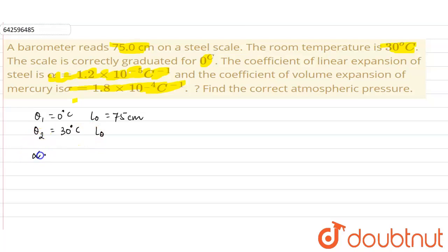Now the coefficient of linear expansion for the steel is given to us as 1.2 into 10 to the power minus 5 per degree Celsius. And the coefficient of volume expansion is given to us as 1.8 into 10 to the power minus 4 per degree Celsius.